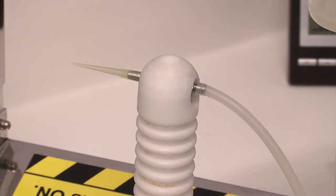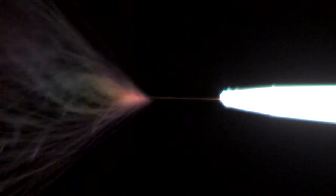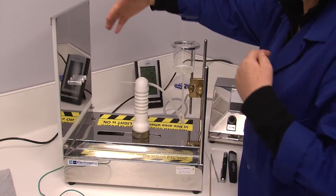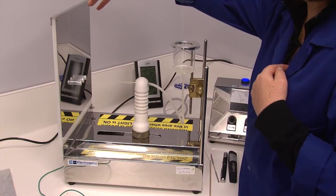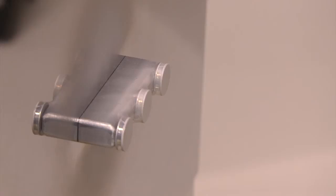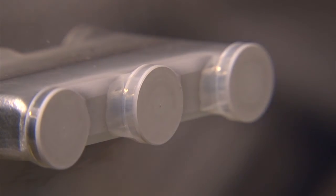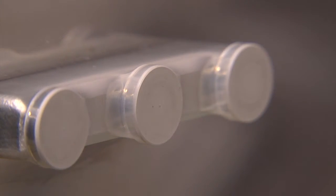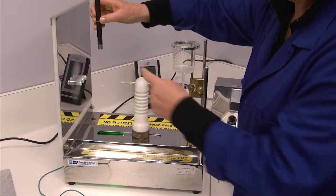And once the electric field overcomes that surface tension, you get the polymer erupting in jets. And as those jets travel towards the grounded collector, you get fibers forming. And you can actually see the fibers here on this now, which is very good. You can observe it through the laser light because the fibers interrupt the light, so you can see it happening.